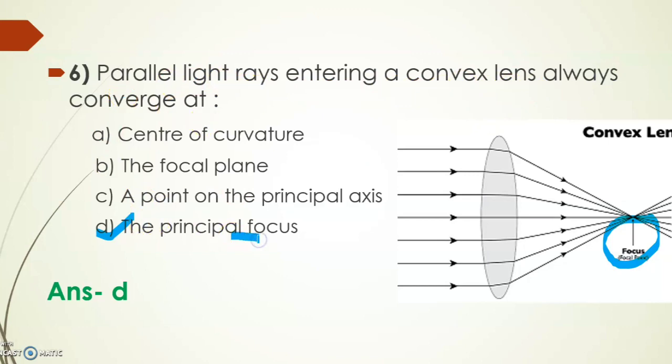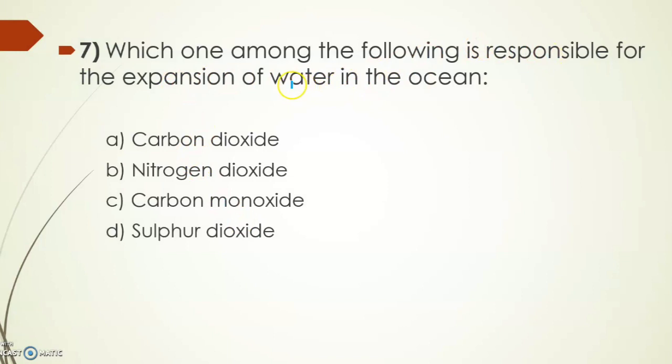Which one among the following is responsible for the expansion of water in the oceans? The options are carbon dioxide, nitrogen dioxide, carbon monoxide, and sulfur dioxide. Its answer is option A, carbon dioxide. This is because plants take carbon, but even more than plants, oceans absorb carbon. There are plants deep in the oceans which use carbon dioxide for photosynthesis, and there are some animals which form carbonate. So maximum carbon dioxide is absorbed by ocean water.